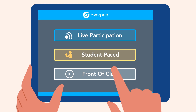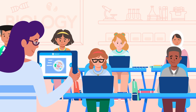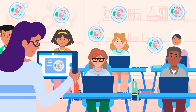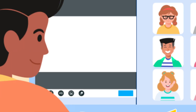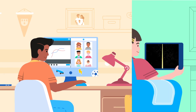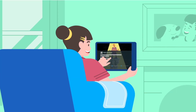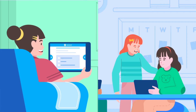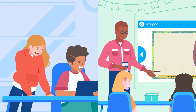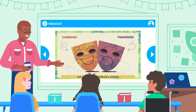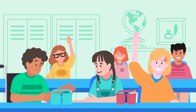Once you're ready to launch your lesson, choose from three teaching modes. In live participation mode you control the pace and students participate on their devices either in person or remotely with web conferencing. In student-paced mode, students move through and participate on their own whether they're working from home or in class working in centers, stations, or groups. With front of class mode you can use Nearpod without student devices and facilitate collaborative discussions.